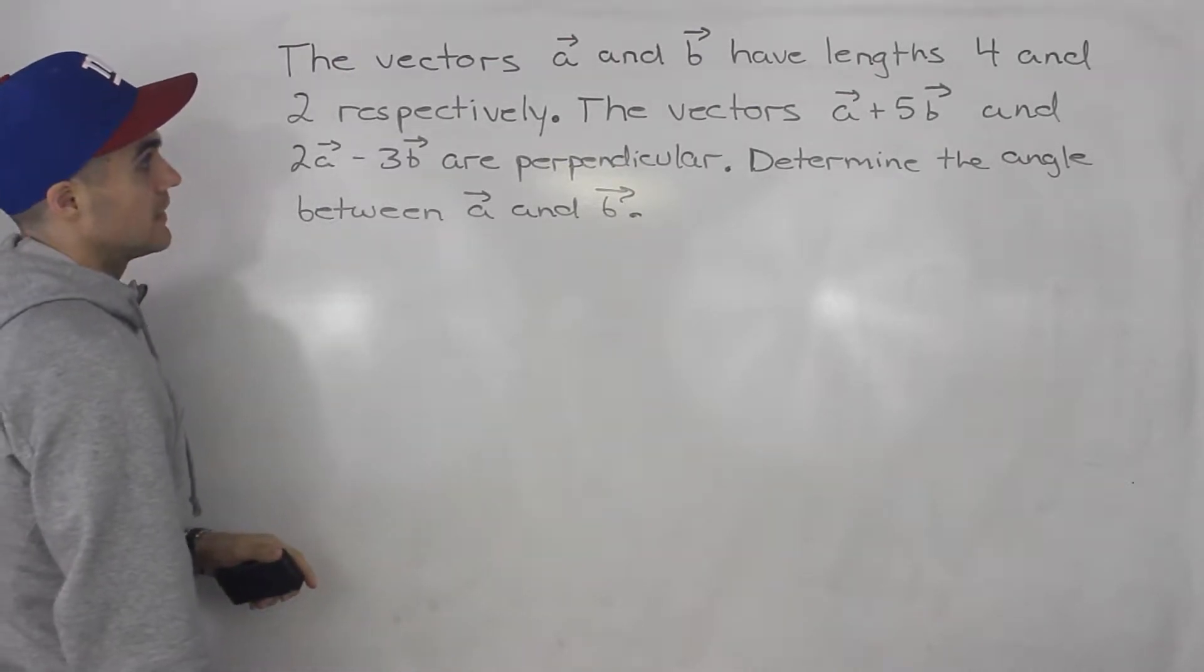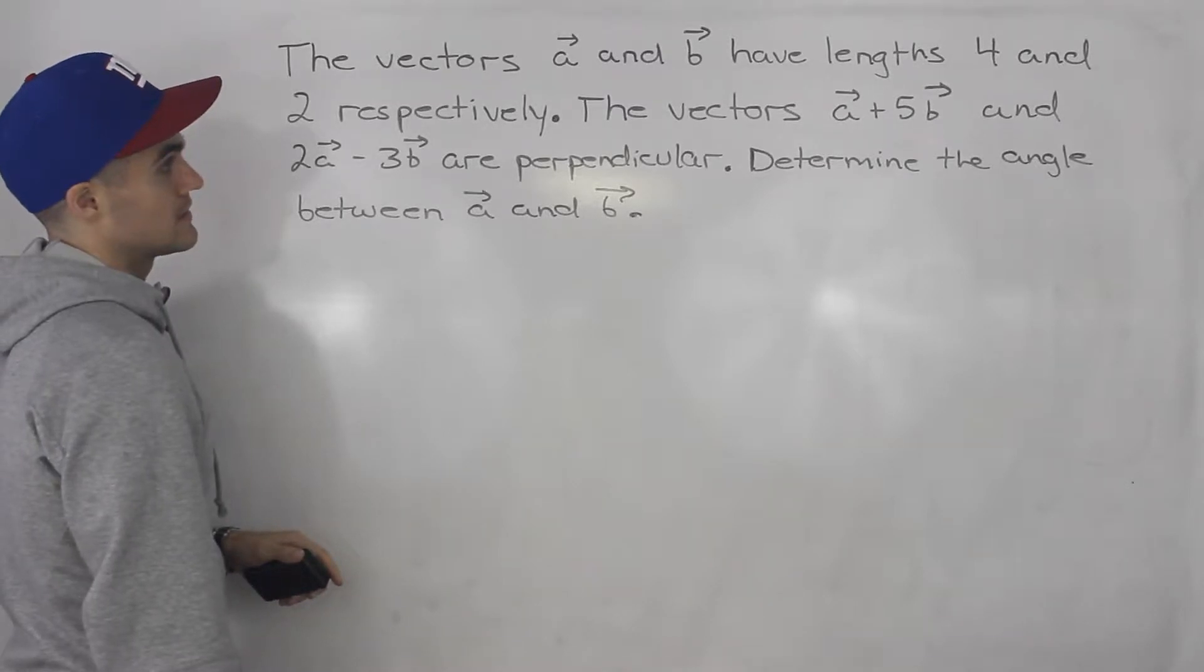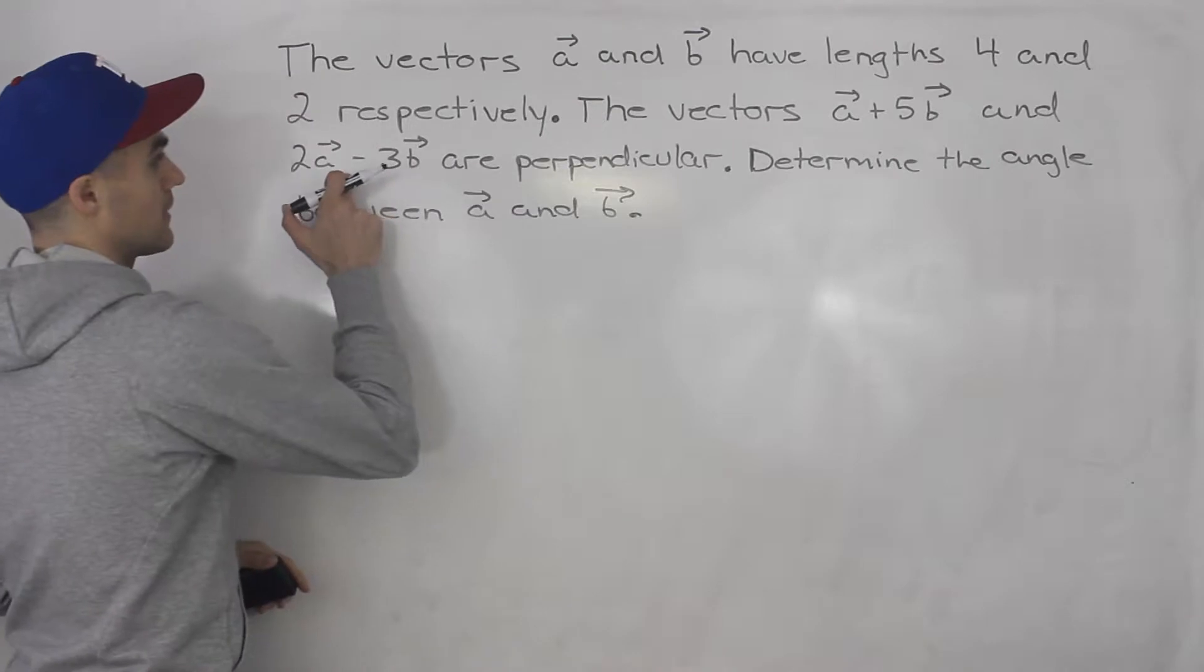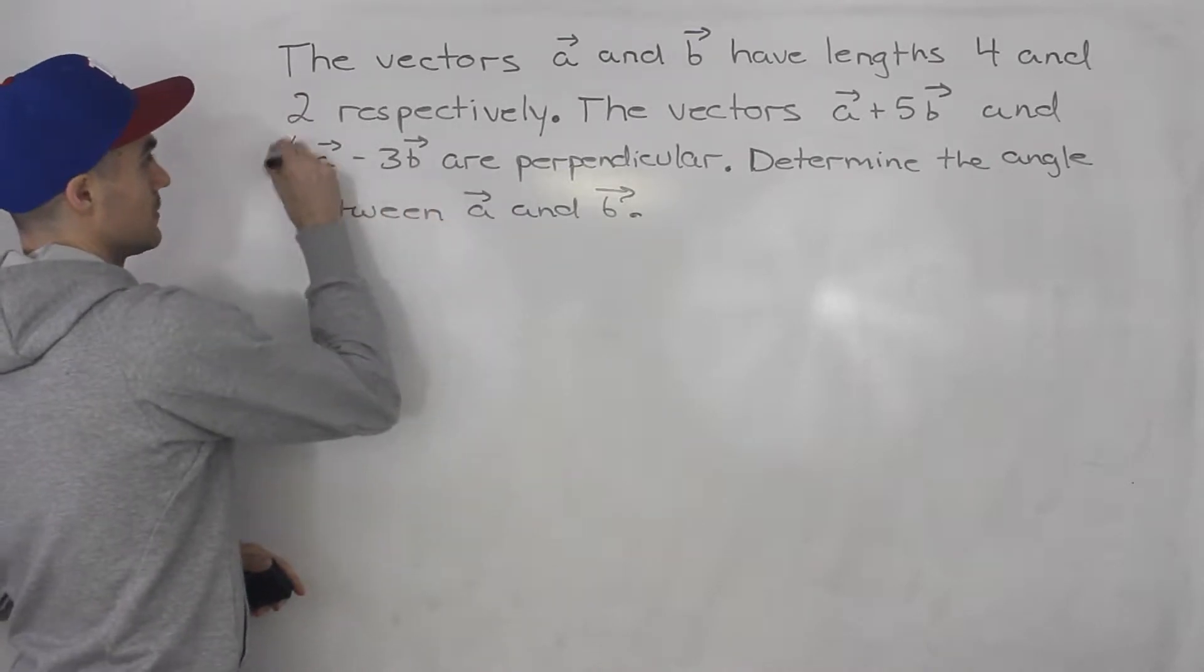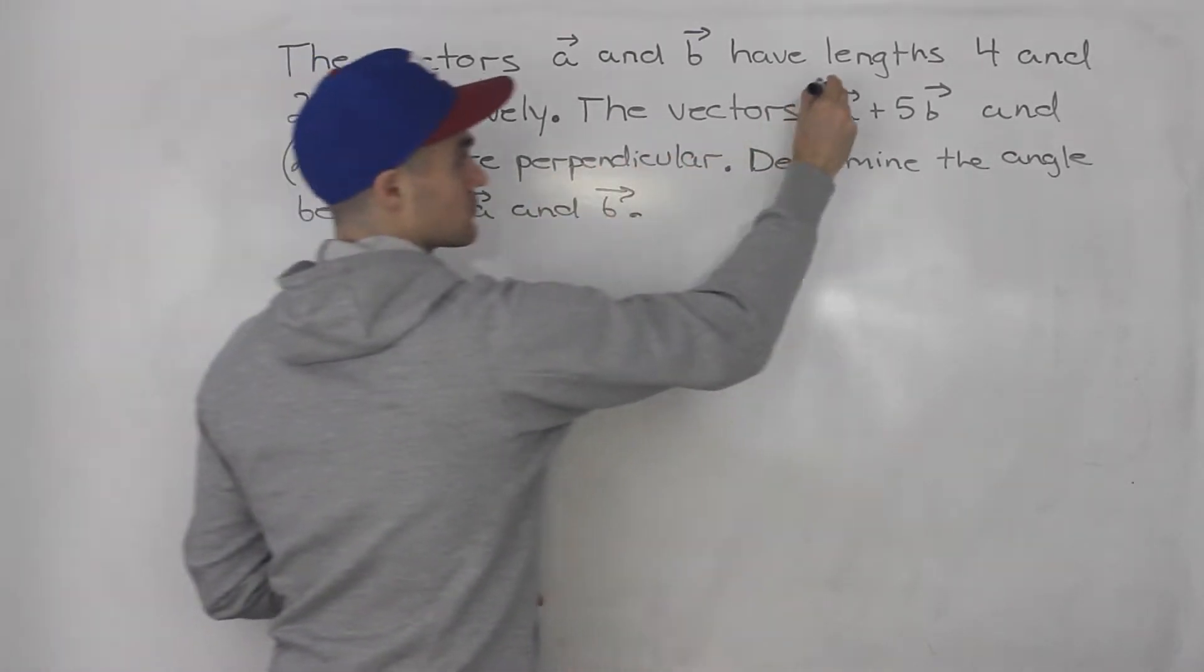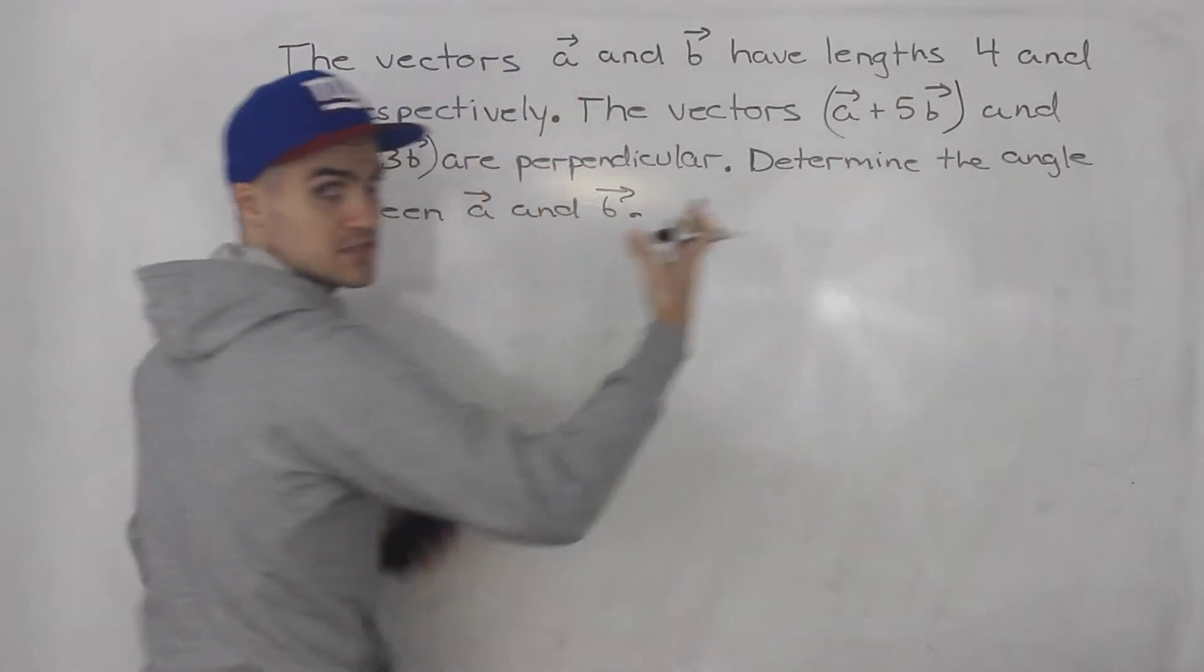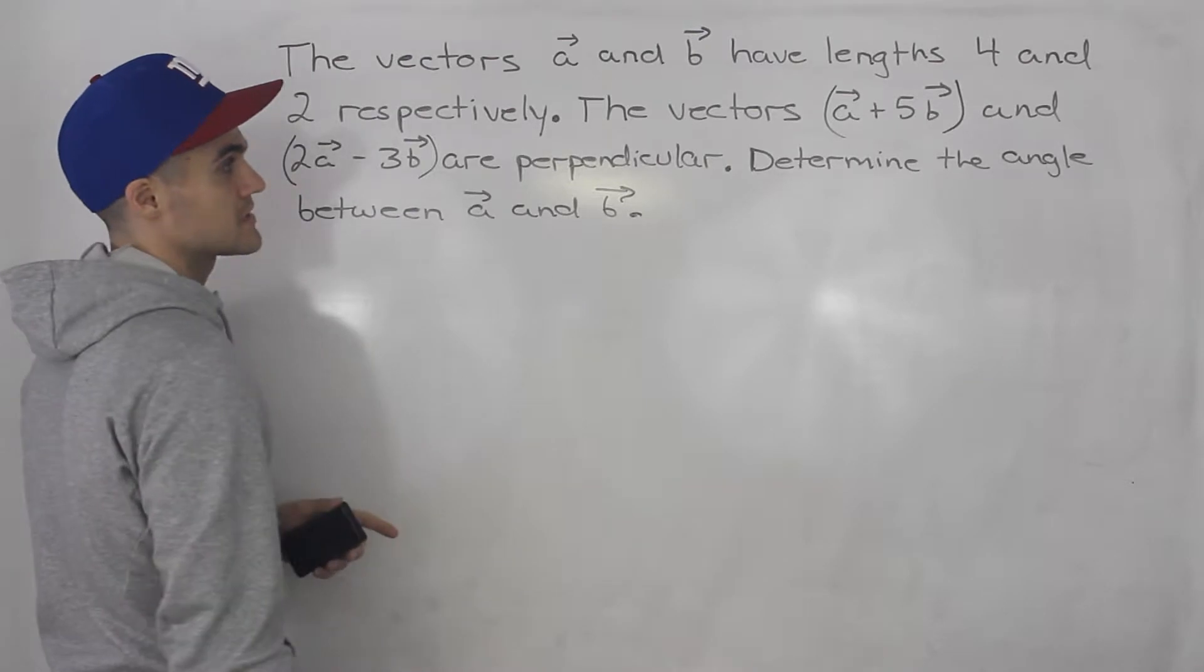In this question, first thing to know is that they told us that these two vectors a + 5b and 2a - 3b are perpendicular. Notice that these are actual vectors that are made of other vectors summed up together and multiplied by scalars.